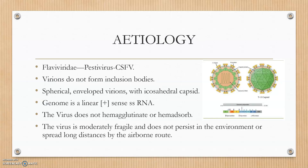Moving to the etiological agent: the family is Flaviviridae, the genus is Pestivirus, and the species is Classical swine fever virus. The virions mostly do not form inclusion bodies, but sometimes polymorphonuclear leukocytes mix with the virion particles to form some particles. The virions do not hemagglutinate or hemadsorb.